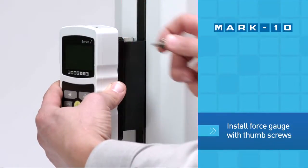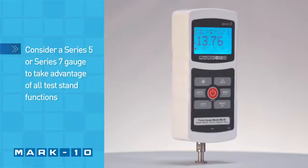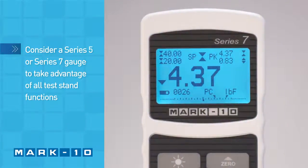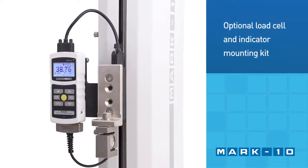Installing a force gauge is simple and it can be easily removed for service and calibration. Consider a series 5 or 7 gauge to take advantage of all test stand functions. An optional load cell and indicator mounting kit is available.